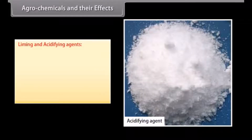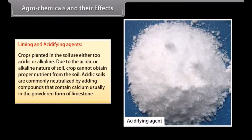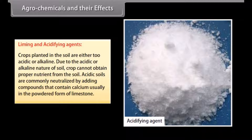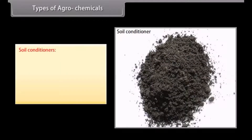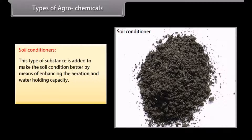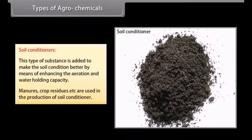Liming and acidifying agents: crops planted in soil that is either too acidic or alkaline cannot obtain proper nutrients. Acidic soils are commonly neutralised by adding compounds that contain calcium, usually in the powdered form of limestone. Soil conditioners are substances added to improve soil condition by enhancing aeration and water holding capacity. Manures and crop residues are used in the production of soil conditioners.